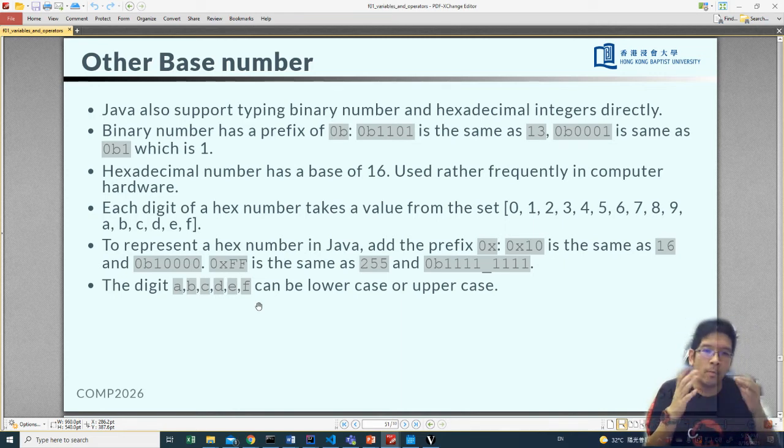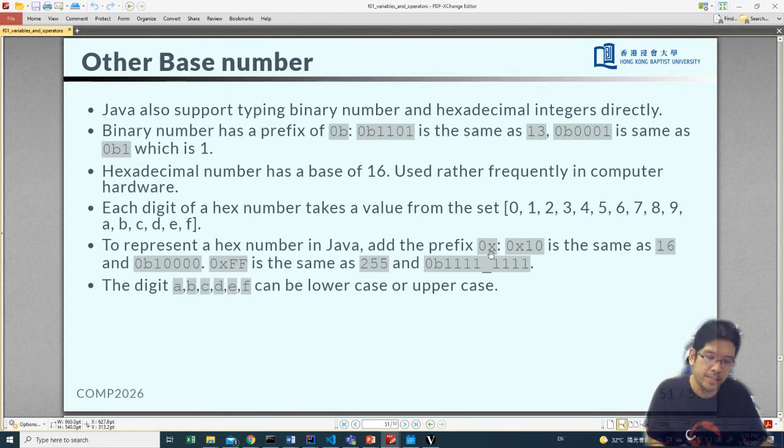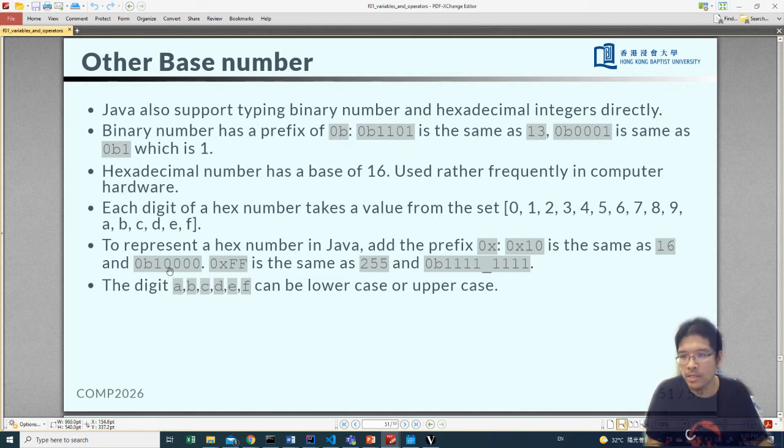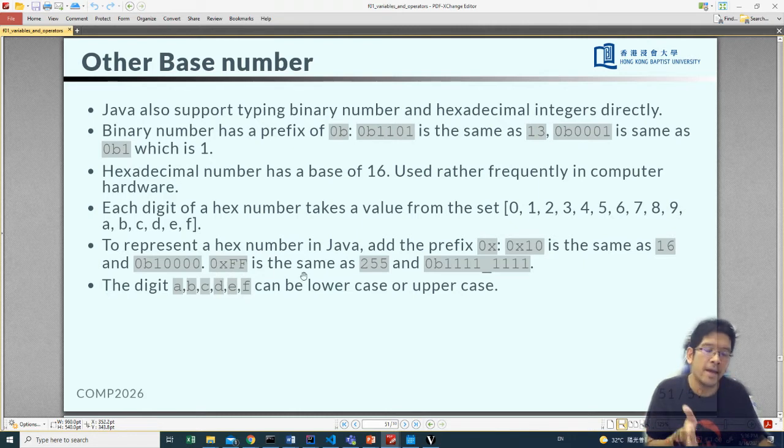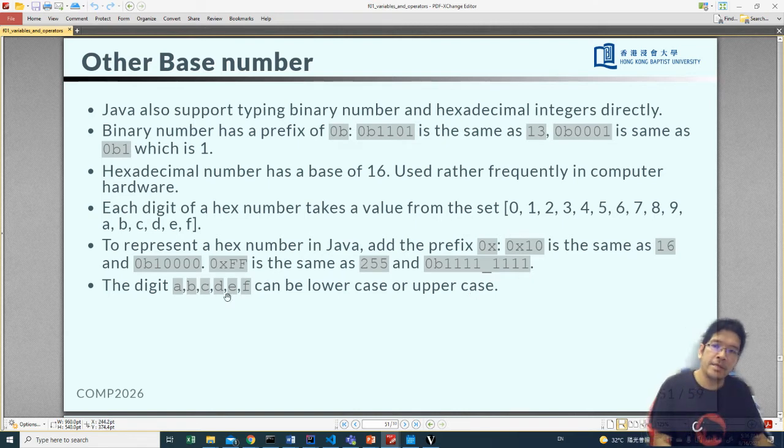And so if you represent the value 10 in hexadecimals, this 1 is actually meaning 16. So 0x10, if you want to represent hex number that will be 0x, 0x10 means it is 16. 0xFF equals 16 times 15 plus 15, same as this one. Now remember you can add an underscore symbol. The digits ABCDEF could be in lowercase or uppercase, up to you.